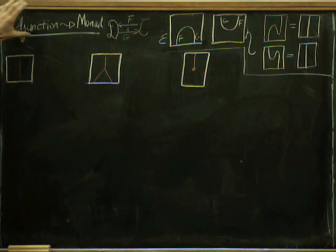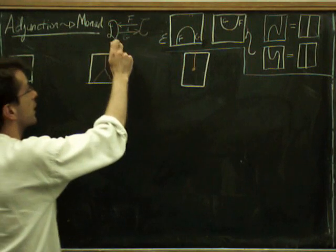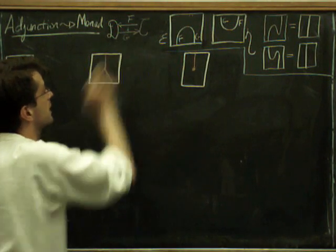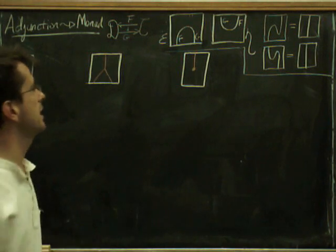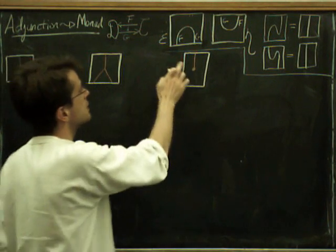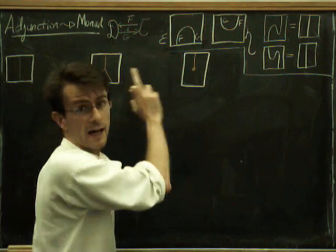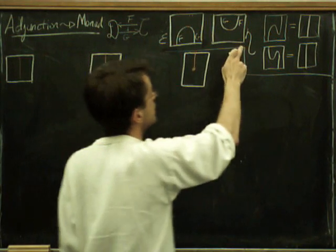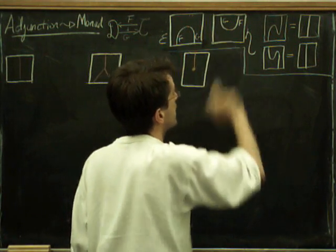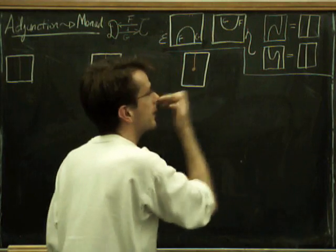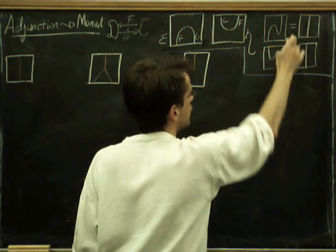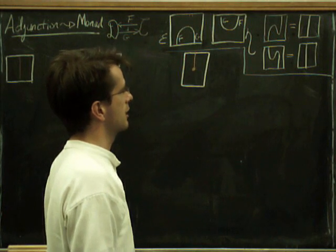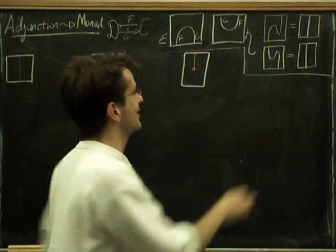So we're going to have an adjunction between C and D with functors F and G, where F is left adjoint to G. That means we have two natural transformations: epsilon, which goes from FG to the identity, and eta going from the identity to GF, and these have to satisfy two relations — formally called the triangle identities.